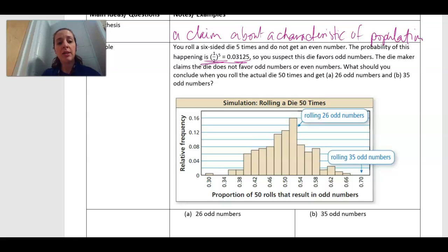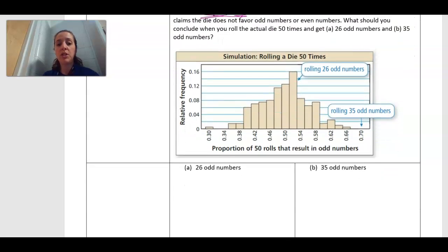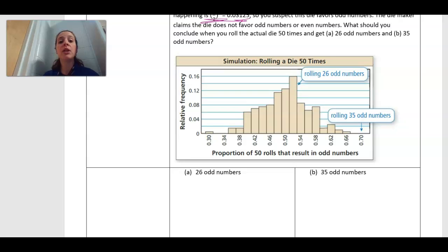So the die maker, the people who make the die, claim that it doesn't favor anything. So when we are rolling it and we're actually testing it out, we're going to see what would I conclude if I get 26 odd numbers and then 35 odd numbers. So what we do is we perform a simulation, and we're not actually going to have to perform these simulations. This information will be given to us. So we simulate rolling a die five times or 50 times. And we figure out how many times do I get an odd and even number. We're looking down here, this proportion is kind of important, of 50 rolls that result in odd numbers. We're looking at how many do we get and dividing it by 50, and that's where we'll get this value along our x-axis. The frequency tells me how often did that happen.